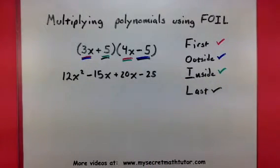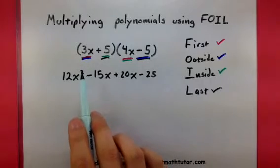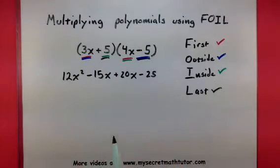And as you can see, through this process, every term in one binomial gets multiplied by every single term in the second binomial. So it's essentially the same multiplication that we should be doing.